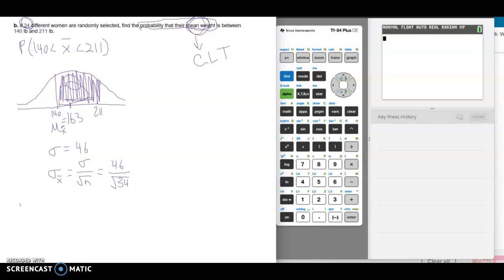So when we're finding the probability that our mean is between 140 and 211 pounds, we're still going to do normal CDF of 140, our lower limit to our upper limit 211. Our mean is still the same at 163. But for our standard deviation, we're going to say, we're going to say 46 divided by the square root of 34. And we can type it into our calculator just like that. I'll show you.